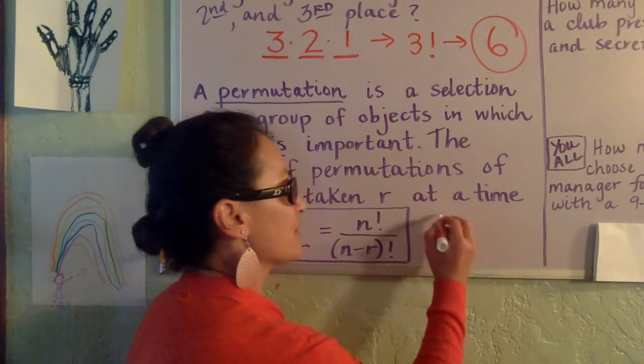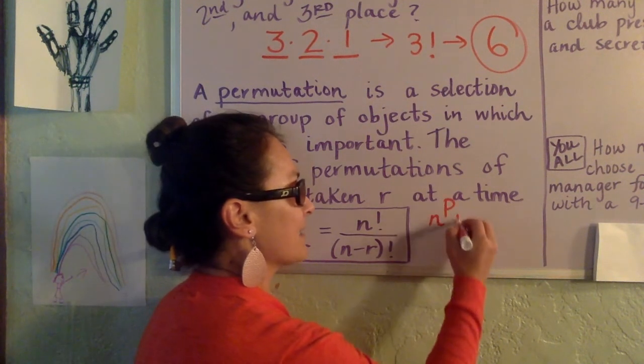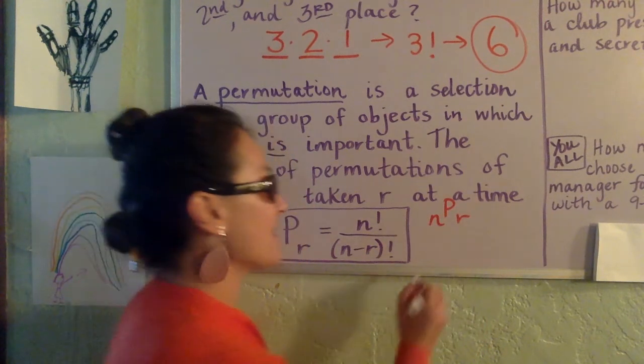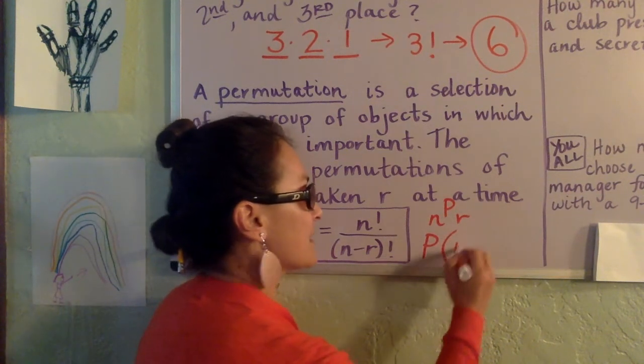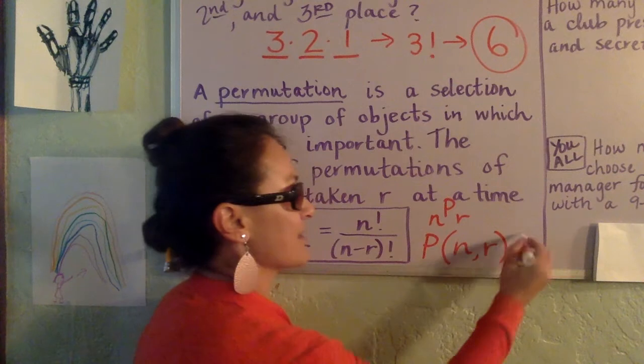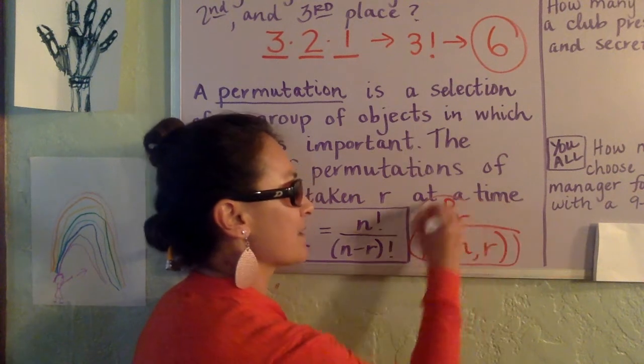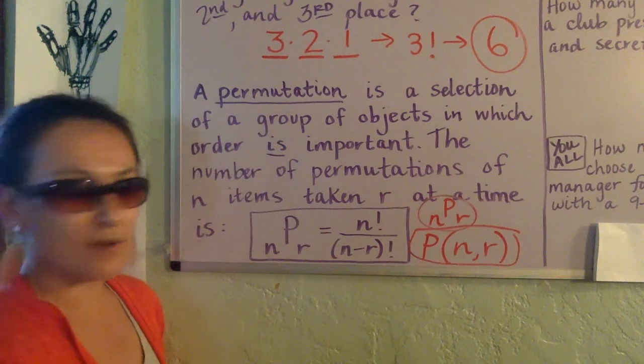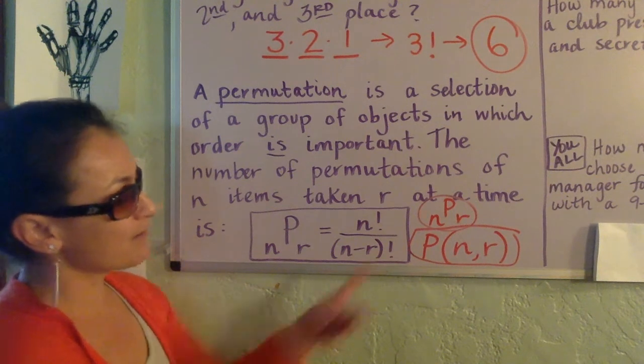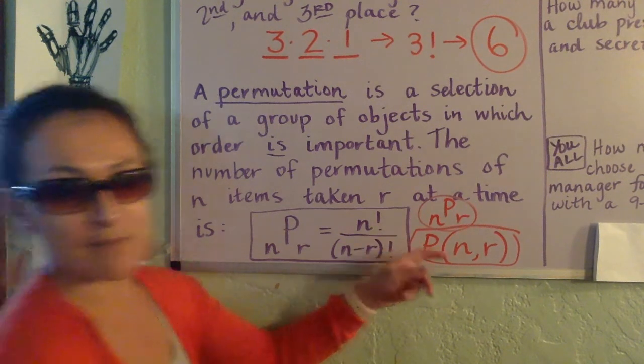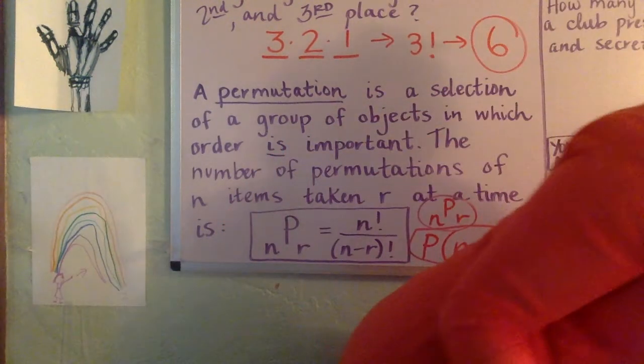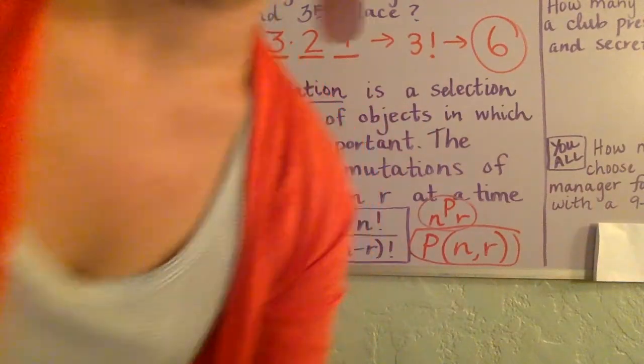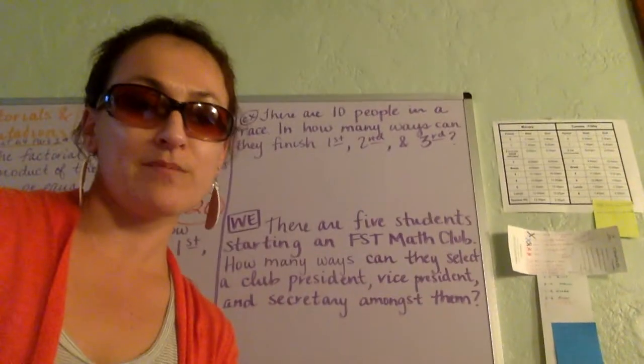I just wanted to point out too, some textbooks write it like this, and then in some places you'll see that it looks like this. So it's just a preference of authors, your own preference. But both of these things mean the same thing. Let's come over here for a moment and take a look at a couple more examples of permutations.